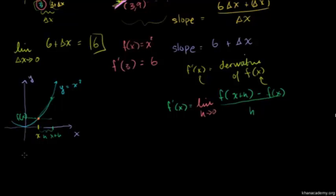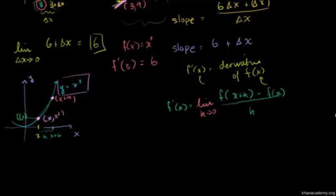Now let's apply this idea to the particular function f of x is equal to x squared. Here we consider the point (x, x squared), so f of x is just equal to x squared. And then this would be the point x plus h, a little bit further along, with y-value x plus h squared. In the last video, we did this for a particular x — we did it for 3. But now I want a general formula. You give me any x — you give me 7, I'll tell you the slope at 7; you give me negative 3, I'll tell you the slope at negative 3; you give me 100,000, I'll tell you the slope at 100,000.